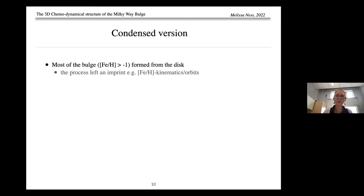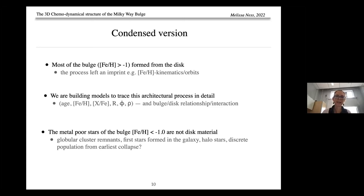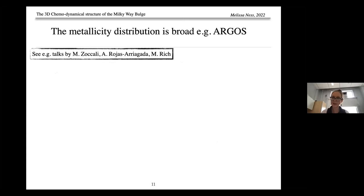The condensed version of what I'm presenting is evidence that most of the bulge formed from the disk, and this process left an imprint in the relationship between the metallicity of bulge stars and their kinematics or orbits. We're building models to use observed ages, metallicities, individual abundances, and spatial positions of stars in the bulge to understand its formation and relationship with the disk. The metal-poor stars of the bulge are believed to be not disk material, and these are important because we can understand if they are globular cluster remnants, signatures of the first stars, halo stars, or a discrete population.